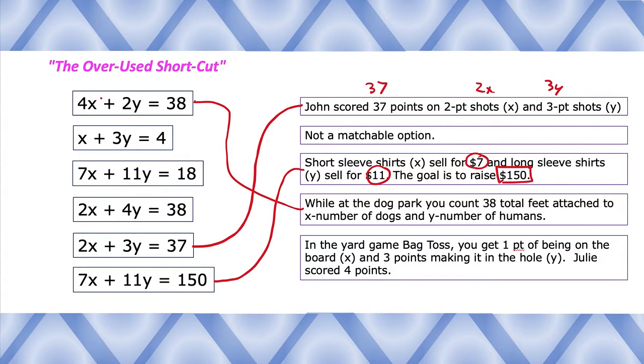Here we go, last one. In the yard game bag toss, you get one point for being on the board X and three points for making it in the hole Y. Julie scored four points. So it looks like we have one point for X plus three points for Y equals four total. So it looks like both this option right here and then this option right here are the not matchables.